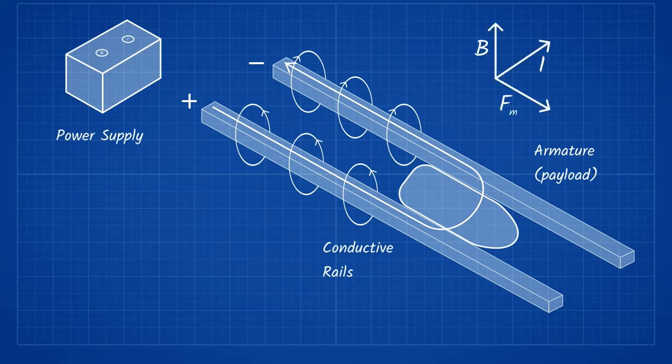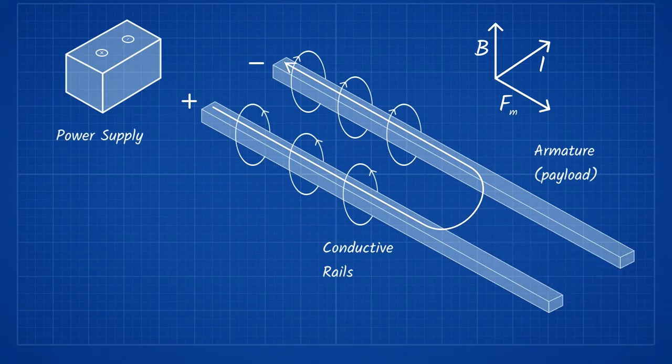This force results in acceleration, pushing the projectile out of the barrel at speeds near or even above Mach 5. The magnitude of this force can be predicted using the equation magnetic force equals the length of the rails times the current times the magnetic field.